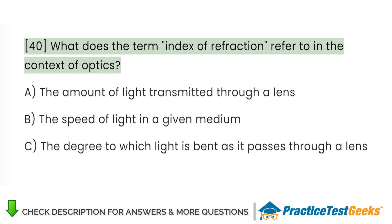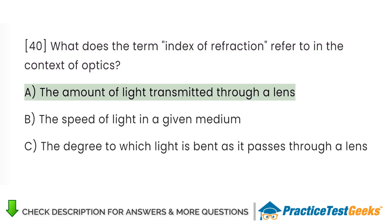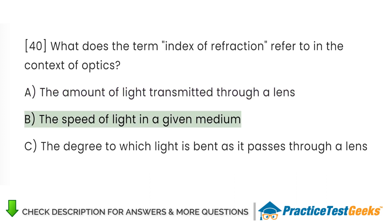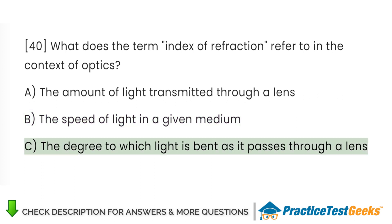What does the term index of refraction refer to in the context of optics? A. The amount of light transmitted through a lens. B. The speed of light in a given medium. C. The degree to which light is bent as it passes through a lens.